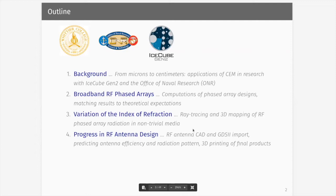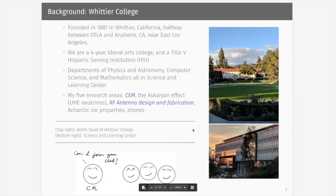So I give the subtitle, From Microns to Centimeters. This is an application of computational electromagnetism in research with IceCube and the Office of Naval Research. So, first of all, let me say a little bit about Whittier College. We are a four-year liberal arts college located in Southern California, halfway between downtown Los Angeles and Anaheim, California.